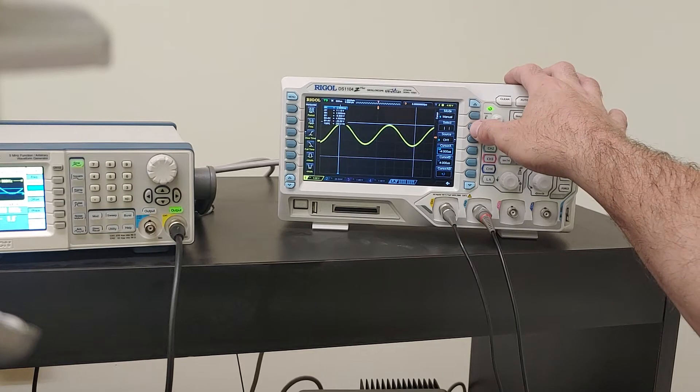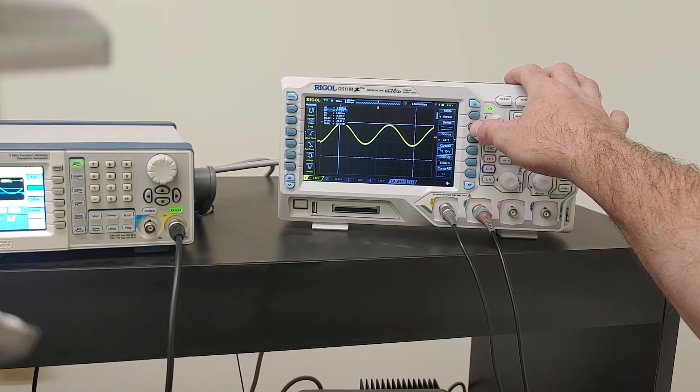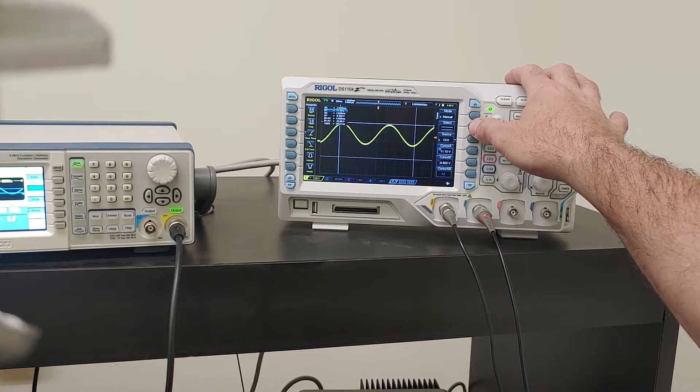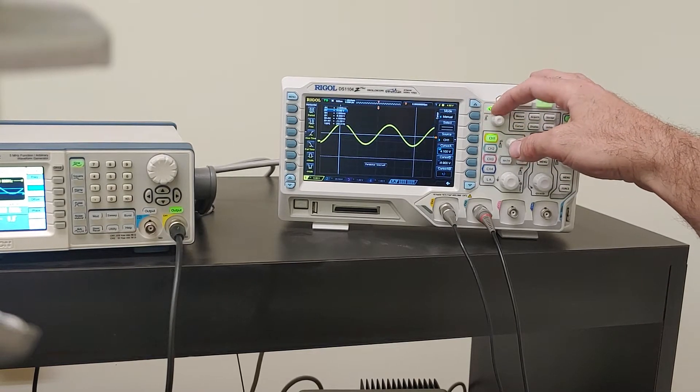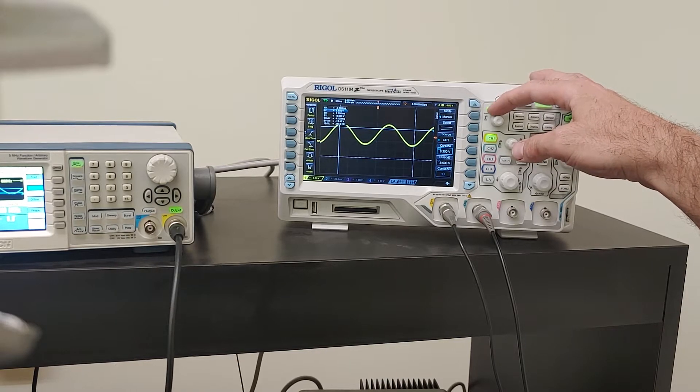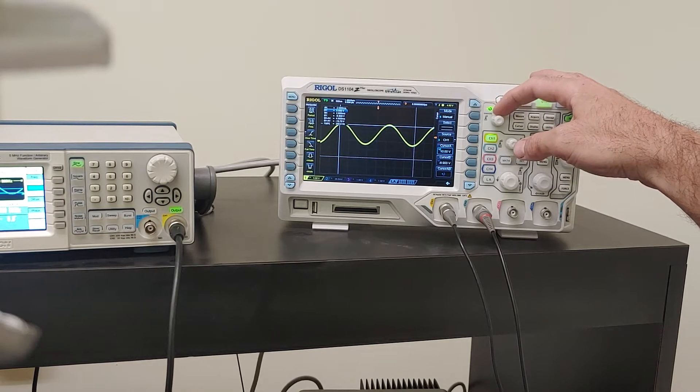In manual, I can either have horizontal or vertical bars. Right now it's vertical. Now it's horizontal. And when I grab this, it moves that up and down. So I can put this here and say, what's the amplitude? I can say, right there.